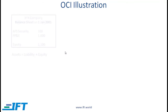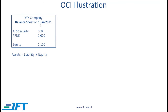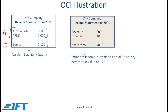I'll give you a simplistic illustration of how other comprehensive income works. Let's say that at the start of the year we have this balance sheet. A company has 100 invested in AFS security and 1,000 invested in property, plant and equipment. Those are the only assets, there are no liabilities. Equity therefore is 1,100, and our basic equation balances: assets equal liabilities plus equity. Over the year, here is the very simple income statement: revenue 300, expenses 100, so net income is 200. We assume that the entire net income is retained — no dividends are paid — and the AFS security which started out at 100 now goes up to 120. So what does the balance sheet look like at the end of the year?